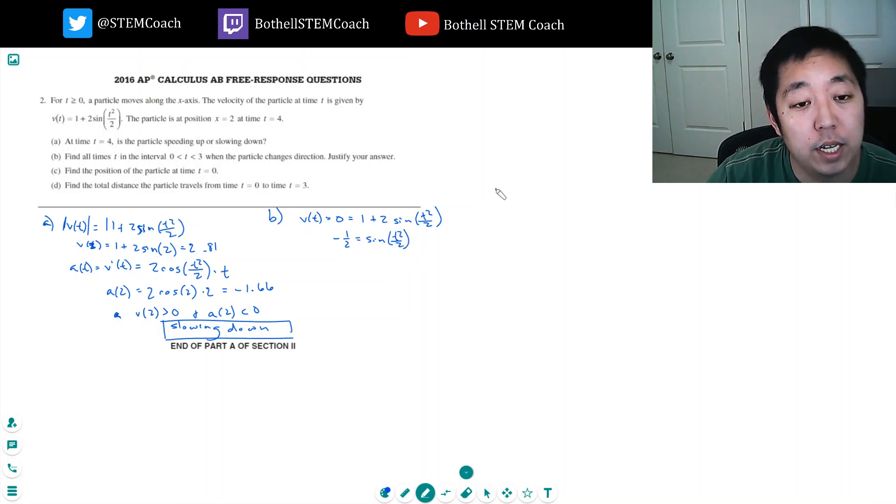Minus 1 half equals sine t squared over 2. So for sine to be, I know you can do this on a calculator. I'm just solving this by hand because I can. For the sine value to be negative 1 half, I could have a negative time, but the inside is positive. So I got to go in the positive direction.